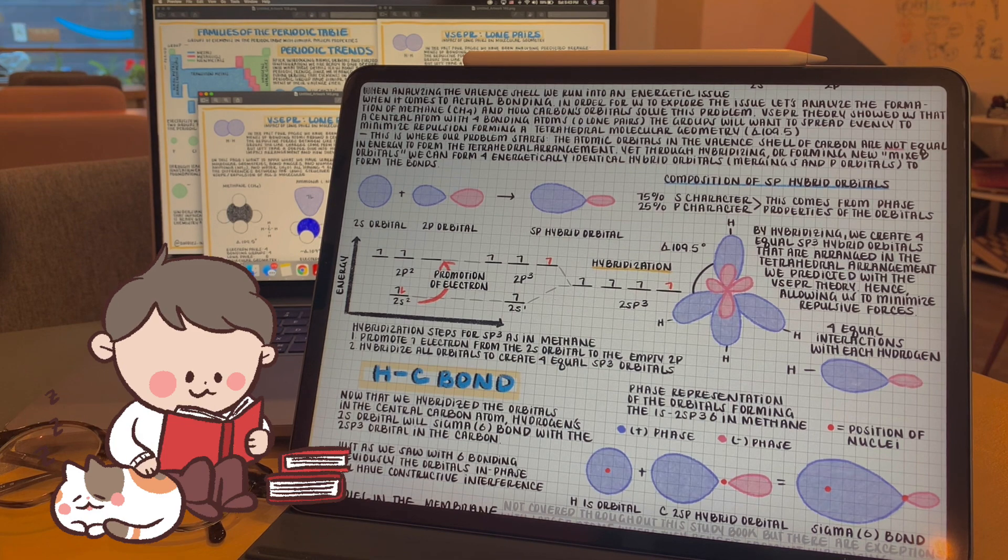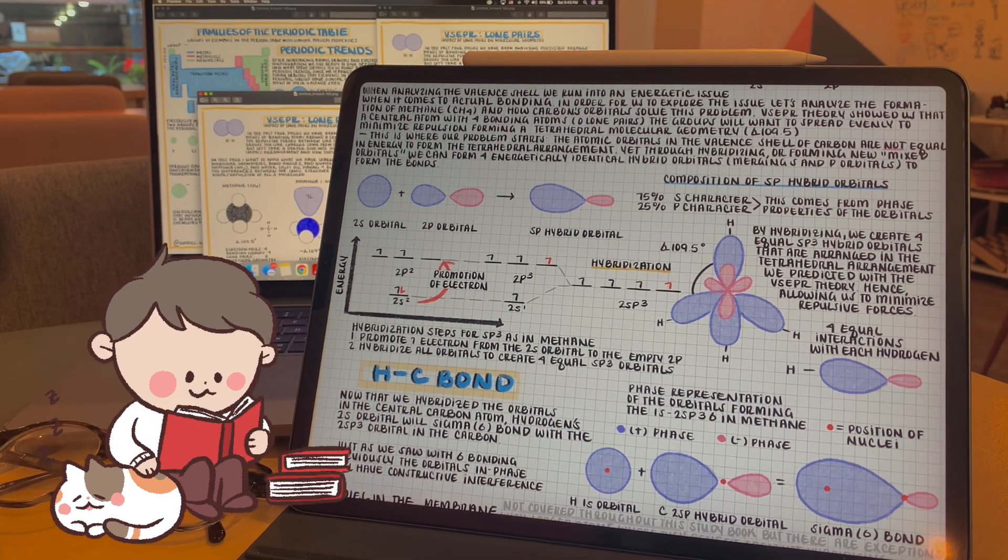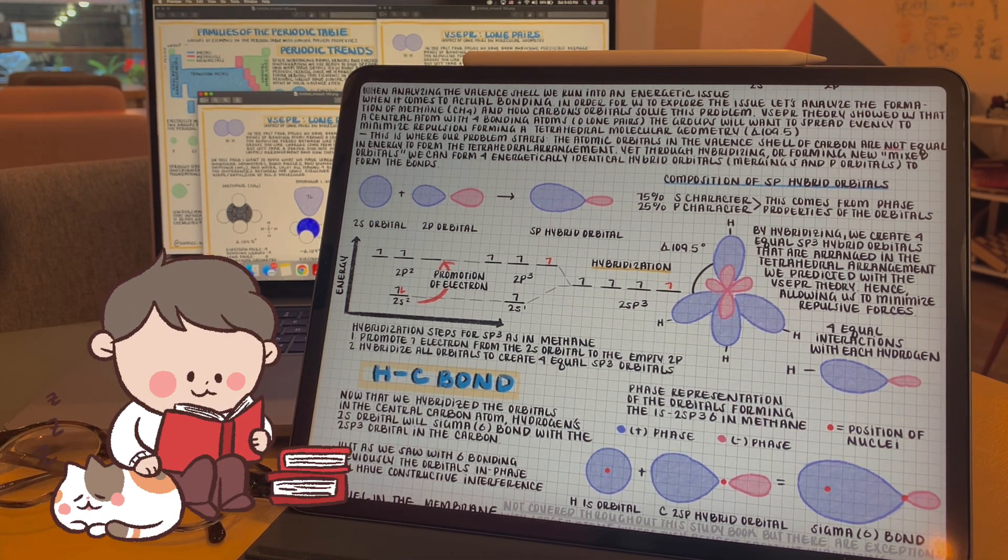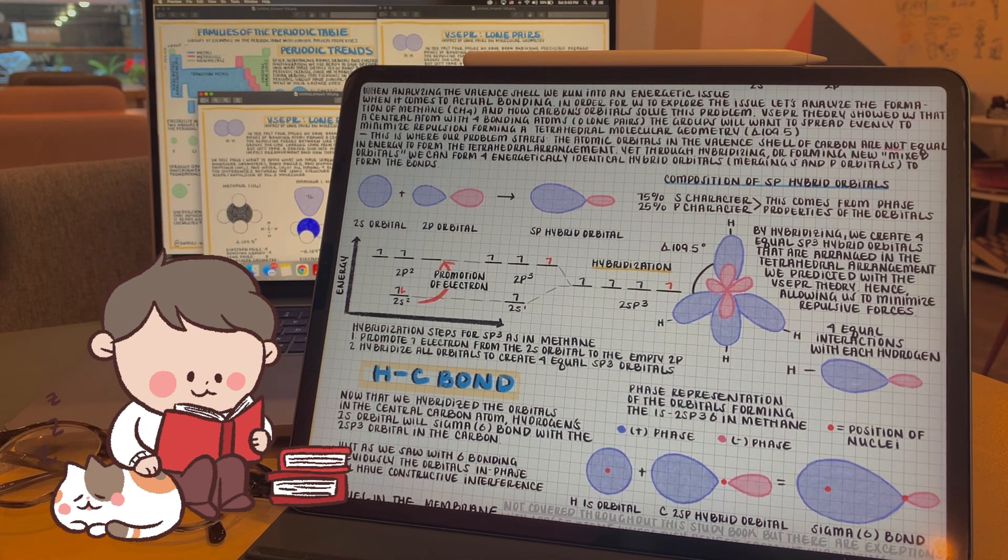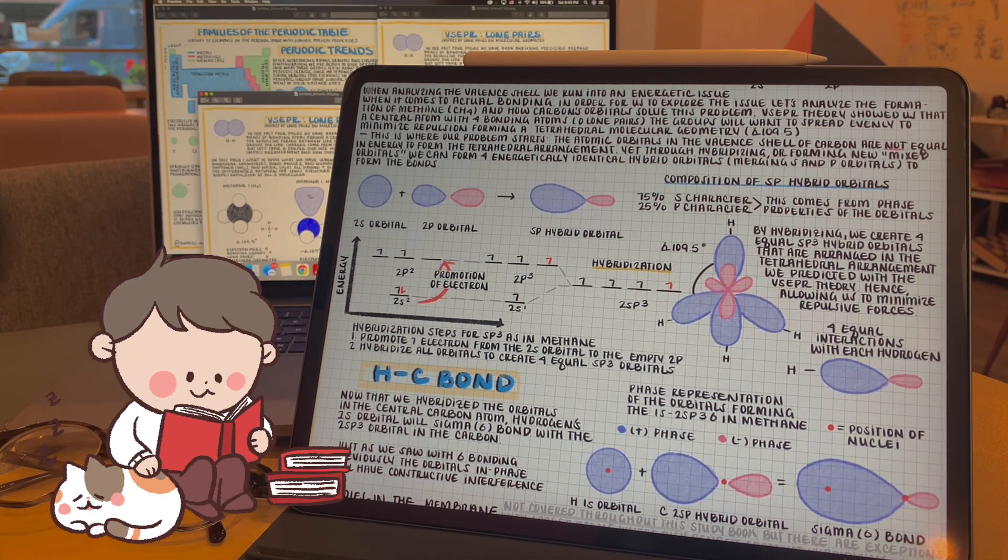The energy of these orbitals is an average of the atomic orbitals we use to create them also. So, in this case, it will be lower than the p-atomic orbitals, but higher than the s-atomic orbitals. We'll see this a lot when we draw out our molecular orbital diagrams.